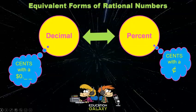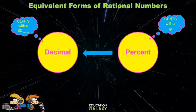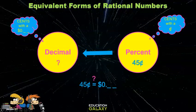To convert between percents and decimals, think about money. The percent would be cents, and the decimal would be how you write that much cents with a dollar sign. To write forty-five percent as a decimal, think forty-five cents, how would you write that with a dollar sign? Zero point forty-five.